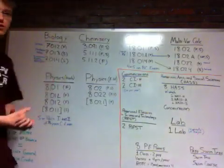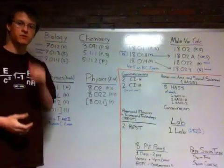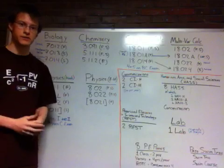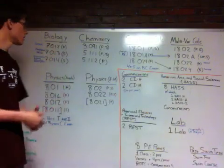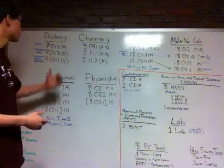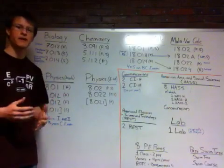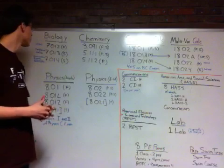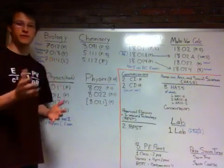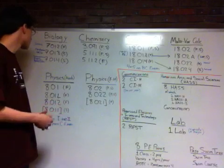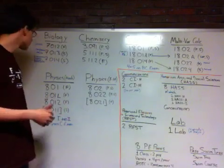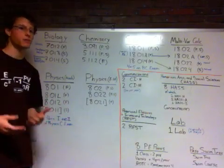The biology requirement can be fulfilled by one of three classes: 7012, 7013, or 7014. The difference between them is that 7012 has a heavy emphasis on genetics, while 7013 has a heavier emphasis on development and neurobiology, and 7014 focuses more on microorganisms, the biosphere, ecosystem, population growth, etc.